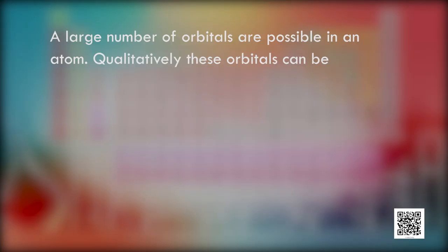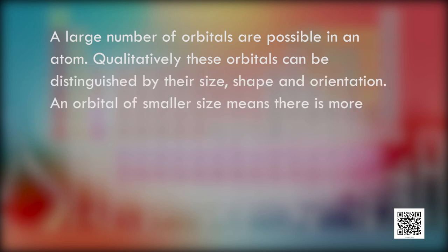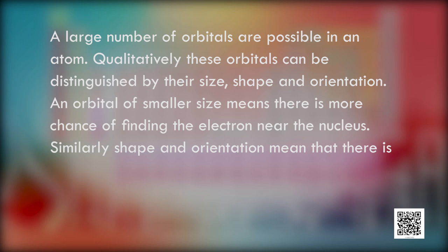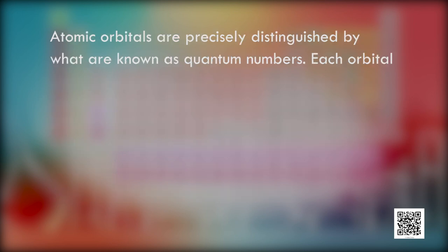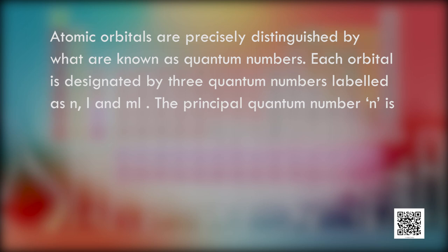These quantum numbers define an orbital, which gives us the probability of finding an electron around the nucleus. A large number of orbitals are possible in an atom. Qualitatively, these orbitals can be distinguished by their size, shape, and orientation. An orbital of smaller size means it is closer to the nucleus, so the chances of finding the electron near the nucleus are greater. Atomic orbitals are precisely distinguished by what are known as quantum numbers. Each orbital is designated by three quantum numbers: N, L, and ML.